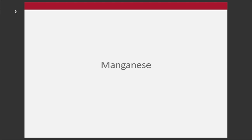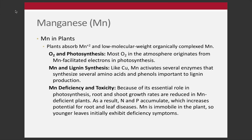Moving on to manganese. This is the nutrient that I indicated from our fact sheet as really the only documented case with OSU trials. It certainly doesn't mean it's the only micronutrient deficient in Ohio, but it's the only one we have documented evidence for. Manganese facilitates photosynthesis — kind of facilitating electrons to oxygen in photosynthesis — and lignin synthesis can also occur with manganese.